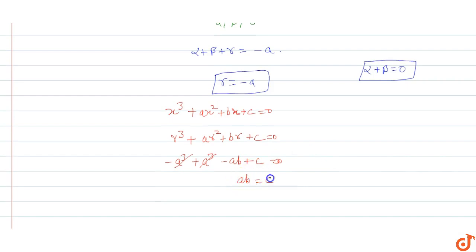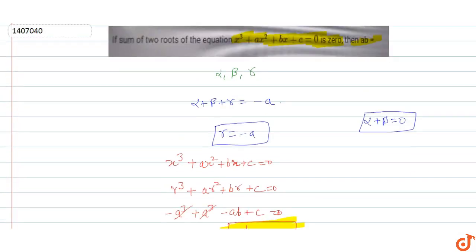The value ab equals c. So if the sum of two roots of this cubic polynomial is zero, then ab is equal to c. Therefore, ab = c is the answer for this question.